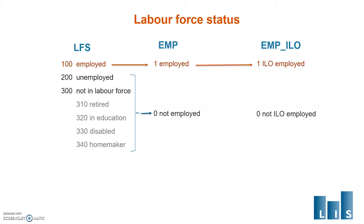In AMP ILO, those who are marginally employed — for example, a retiree that works five hours a week or a student with a student job — will be coded as ILO employed. Therefore AMP ILO has a larger universe of employed than AMP.